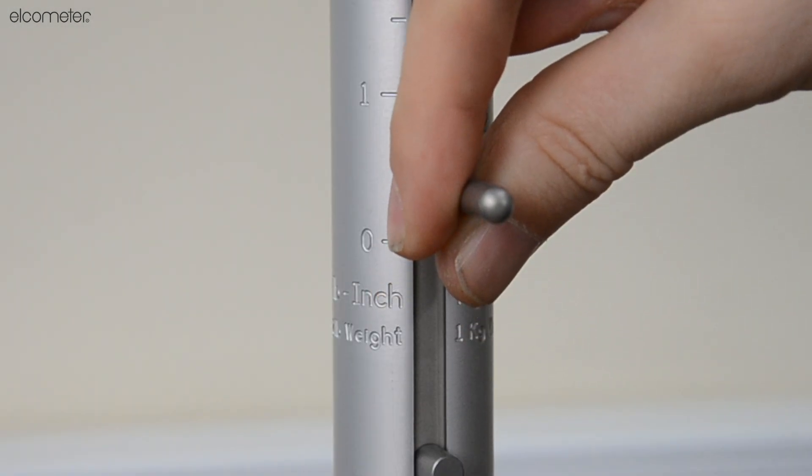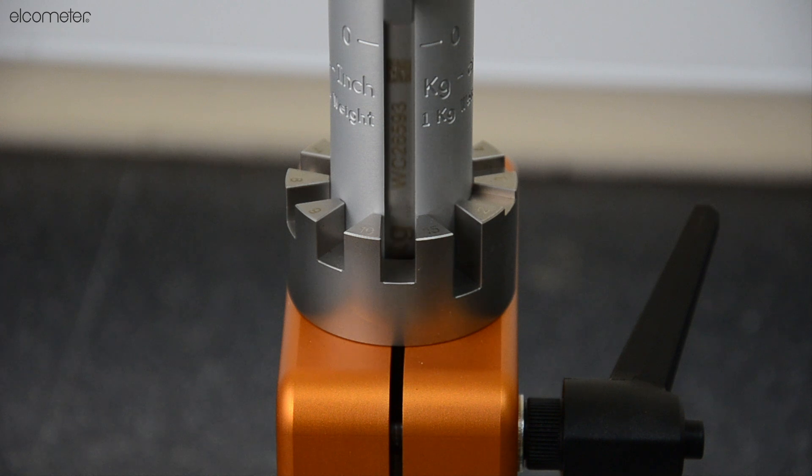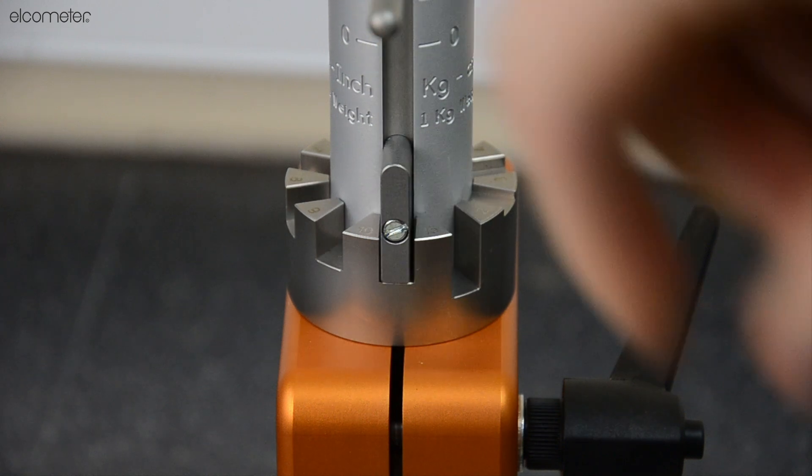Lift the weight until your desired depth is aligned with the slot in the guide tube, then lower the weight onto the locating pin at the base. This ensures your falling weight is correctly aligned.